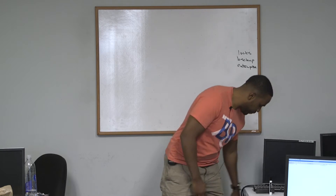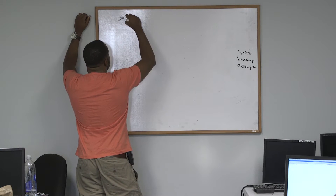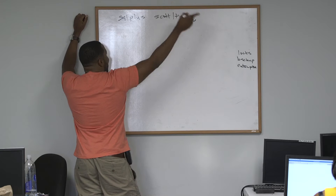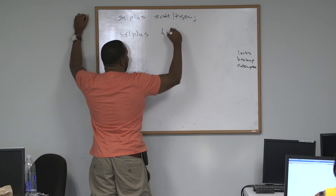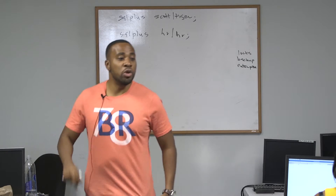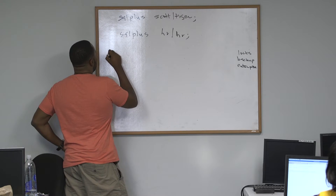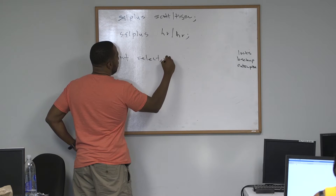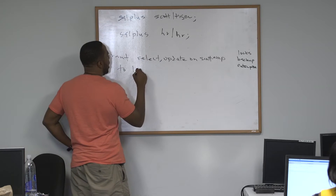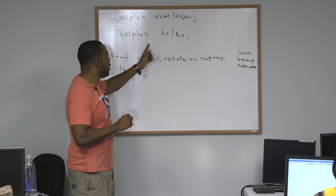On the middle tab, connect as the Scott user: SQL Plus scott/tiger semicolon. On the last tab, connect as HR: SQL Plus hr/hr. On the first tab — where you've been working as SYS DBA — do: GRANT SELECT, UPDATE on scott.emp TO hr. Second tab: connect to Scott. Third tab: connect to HR.